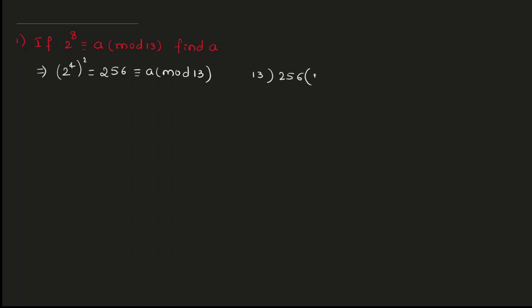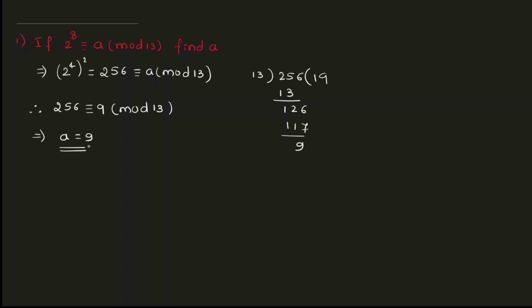Divide 256 by 13: 13 times 19 is 247, so the remainder will be 9. Therefore, 256 is congruent to 9 mod 13, which means a is equal to 9.